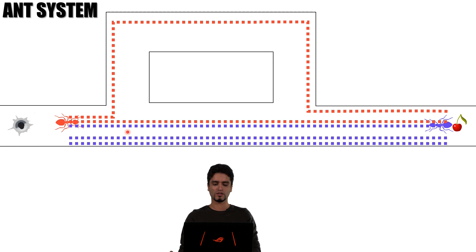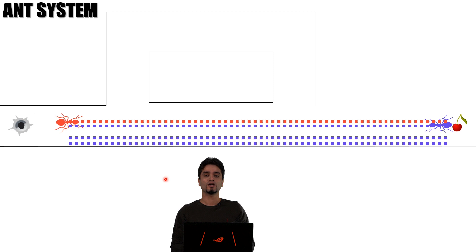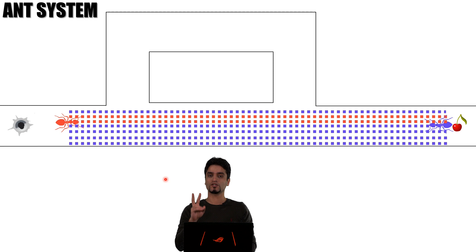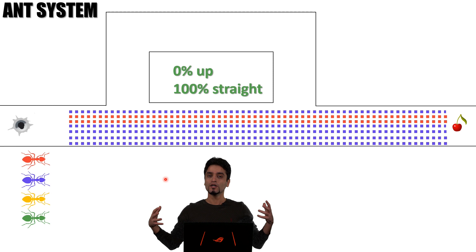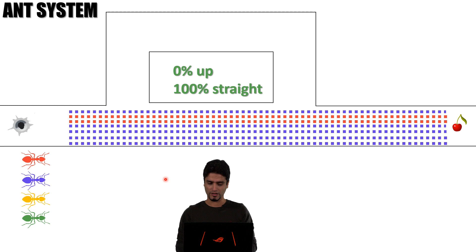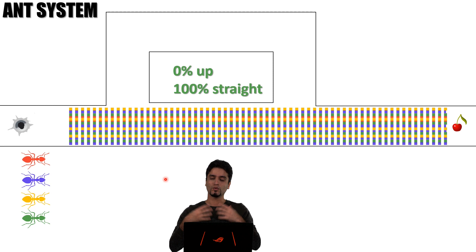Over time, we have an established path which is the shortest path from the nest to the food source. And remember, we don't have just two ants — there are many other ants that follow the path with higher pheromone concentration. At some point, a dominant path emerges, and with this simple technique, ant colonies across the globe always find the shortest path between the nest and the food source.